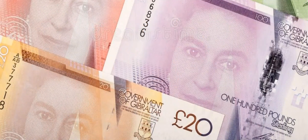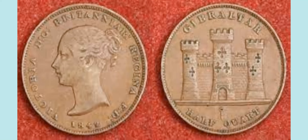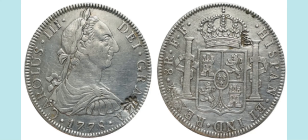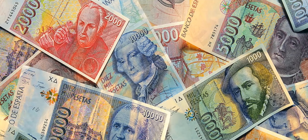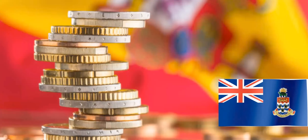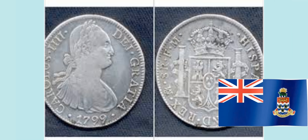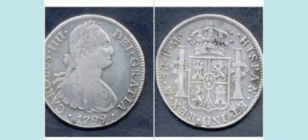The Gibraltar pound is Gibraltar's national currency and has the same value as the British pound. Both the GBP and the GIP can be used in Gibraltar. From 1825 to 1872, Gibraltar's currency was complicated, with a system based on the Spanish real de plata but including British, Spanish, and Gibraltarian coins. The real was pegged to the pound at one Spanish dollar for four shillings and four pence.